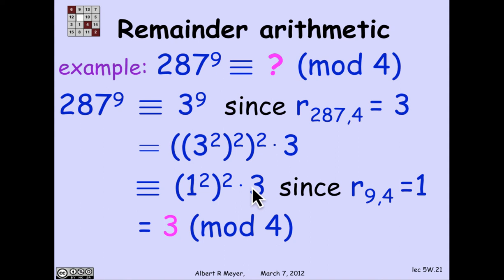But that's 1 times 3. And the punchline is that 287 to the 9th is congruent to 3 mod 4 by a really easy calculation that did not involve taking anything to the 9th power.